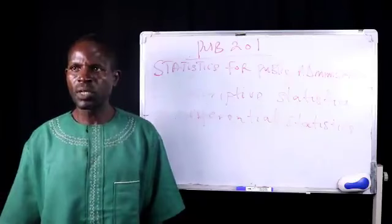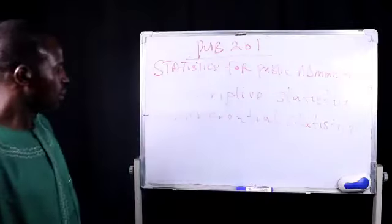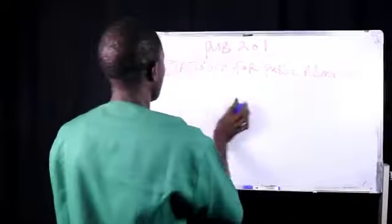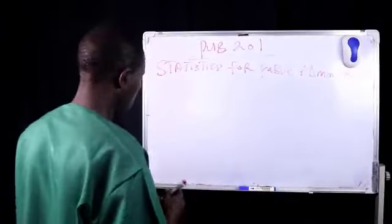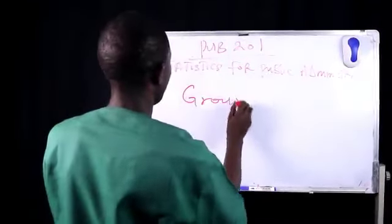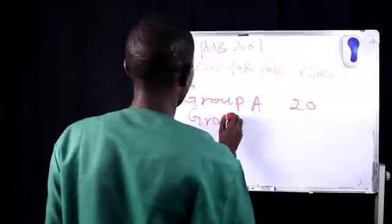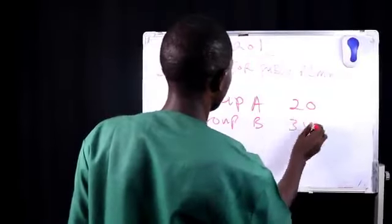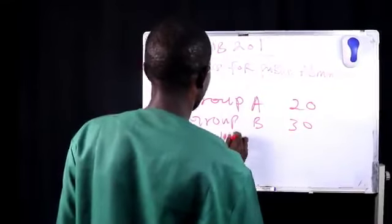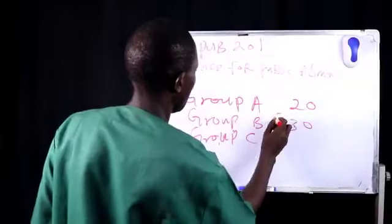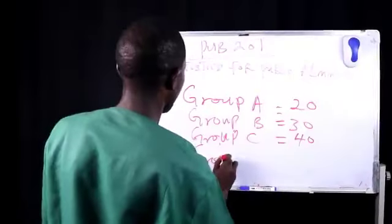For example, the following scores represent the performance of statistics students in first semester examination. We have a result like this: having Group A, 20; Group B, 30; Group C, 40; then Group D, 10.